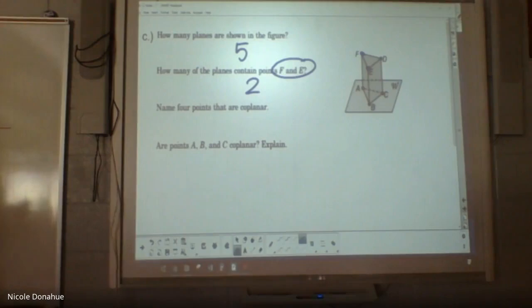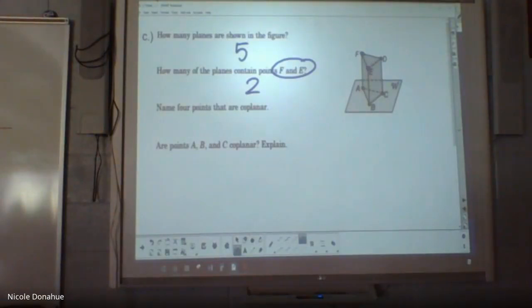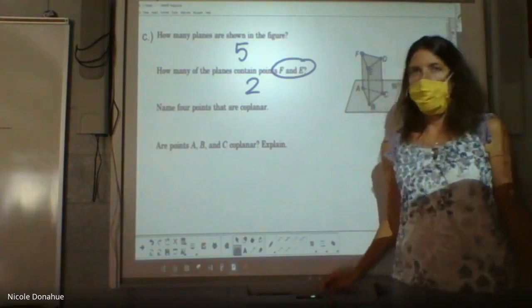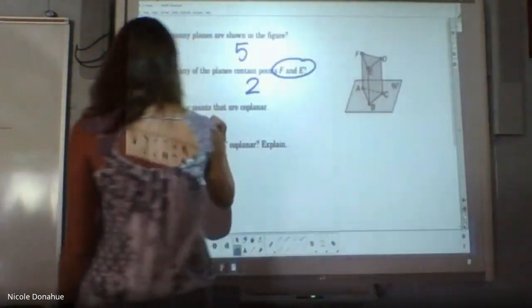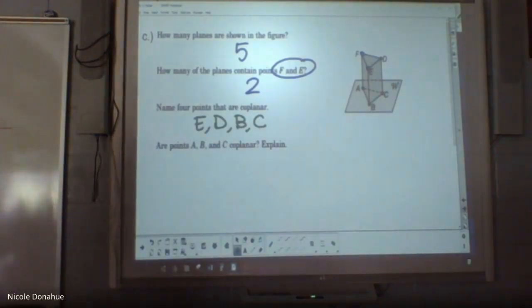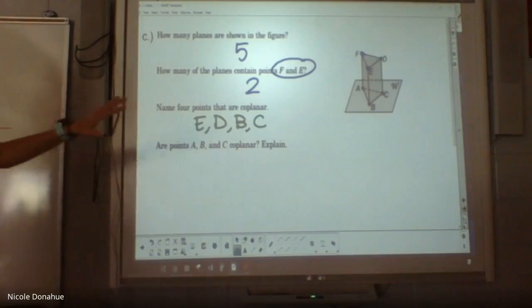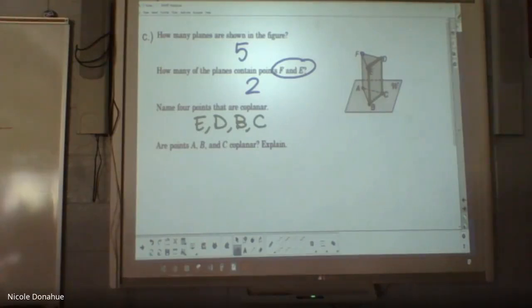And then name four points that are coplanar. So remind me of what coplanar means. Same plane. So four points that are coplanar. Anyone think they have four that are coplanar? Go ahead, Lena. So she said E, D, B, and C. What if you guys said something else? Does that mean you're wrong? Are there other correct answers up there? Yeah. So this is one set of coplanar points. These four are all on this same plane. There's like four or three correct answers for this. So those, or you can go F, E, B, A, or F, D, C, A. So there's like four different options for that.